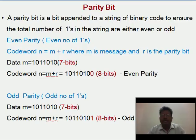For example, message m is 1011010, which is 7 bits. How to calculate the Parity Bit for it? Since the message consists of an even number of ones, the Parity Bit for this message would be 0. Therefore, the code word would be 10110100, where the 8th bit is added as a Parity Bit with value 0 to make it an even parity message.